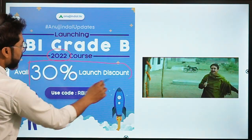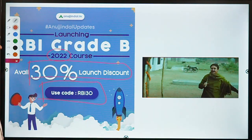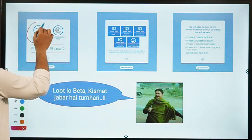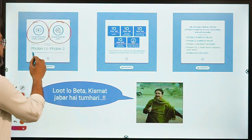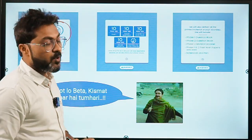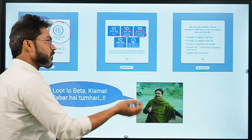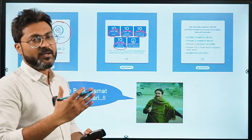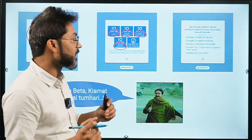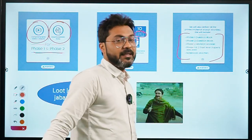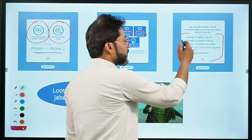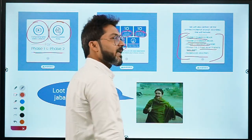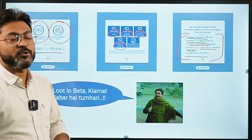We have launched the 2022 course for RBI Grade B. You can avail a 30% launch discount using code RBI30. The course includes comprehensive video lessons, downloadable PDFs for both Phase 1 and Phase 2, 10 mock tests each for Finance Management, Economics, and Social Issues, English descriptive, and answer checking for descriptive ESI and FM. You'll also get a kit delivered at your doorstep including Phase 1 and 2 question books, revision booklet, past year papers, a notebook, and a pen. Visit anujindal.in to buy the course.